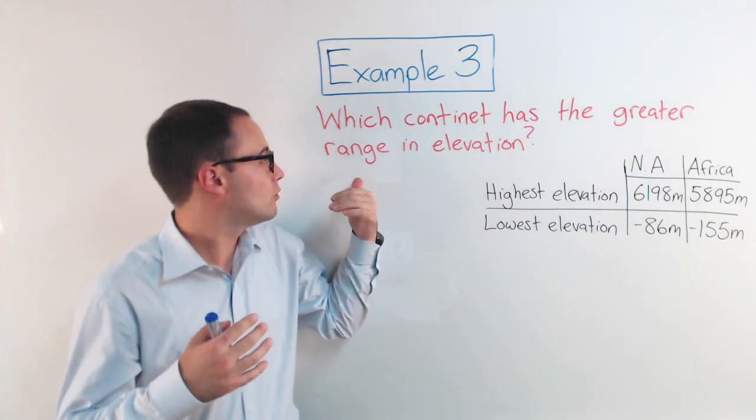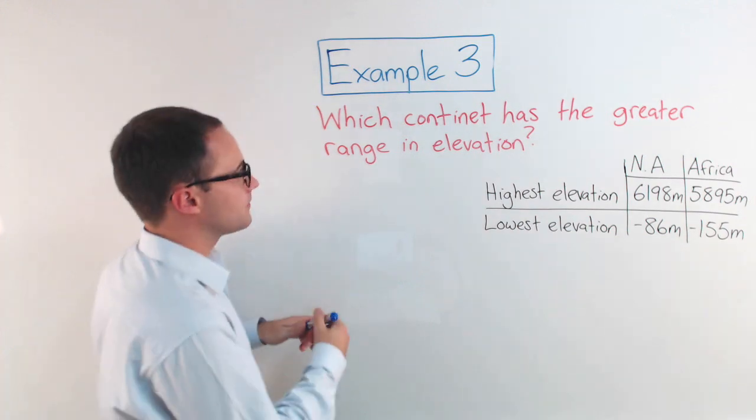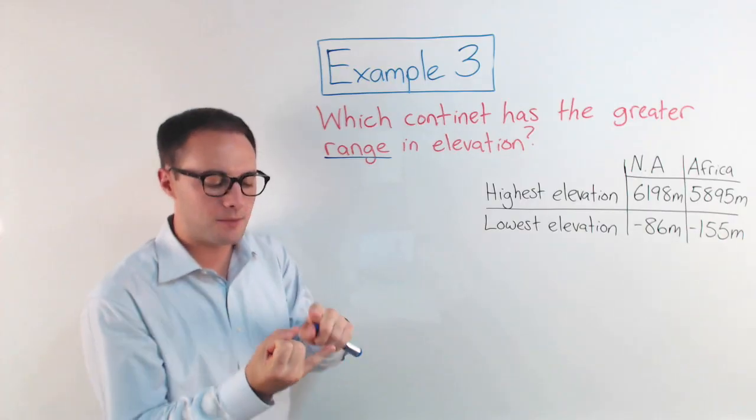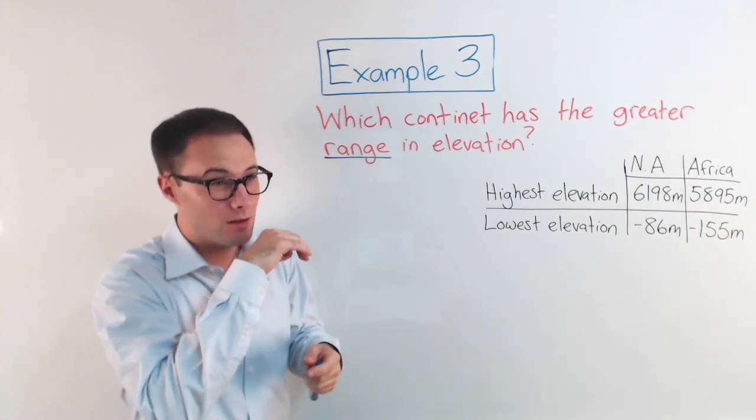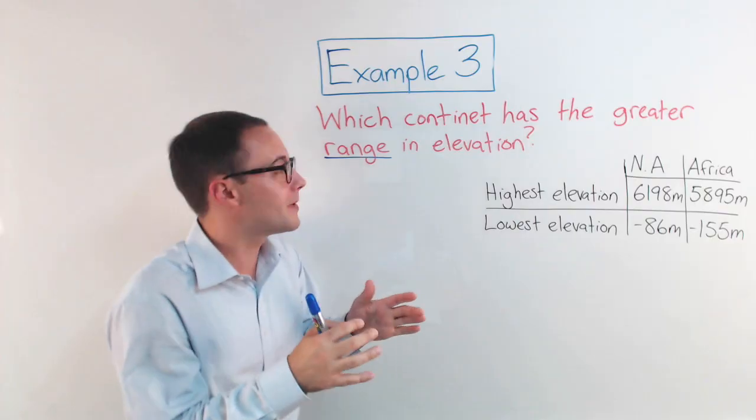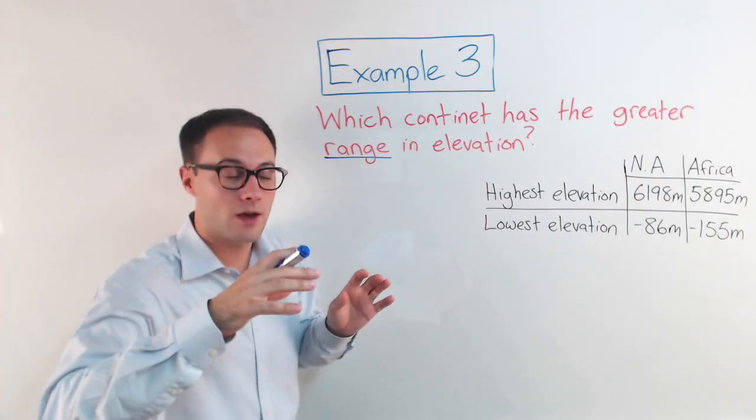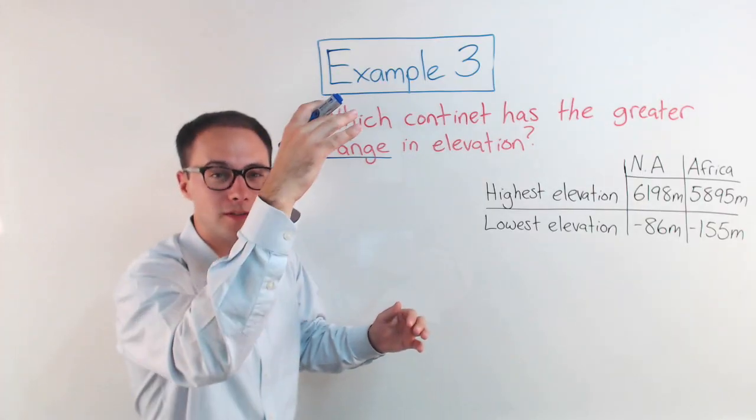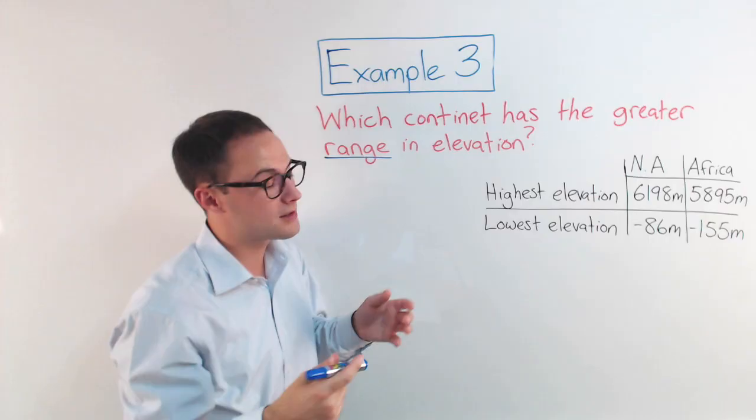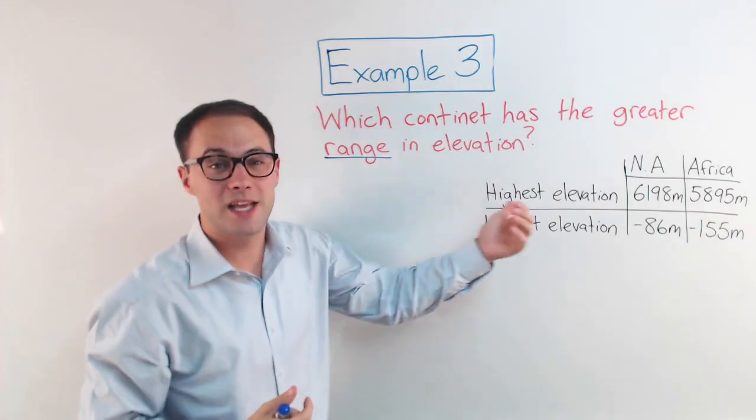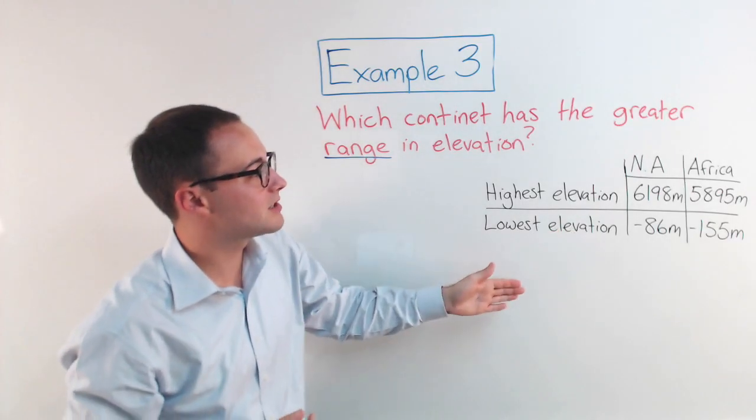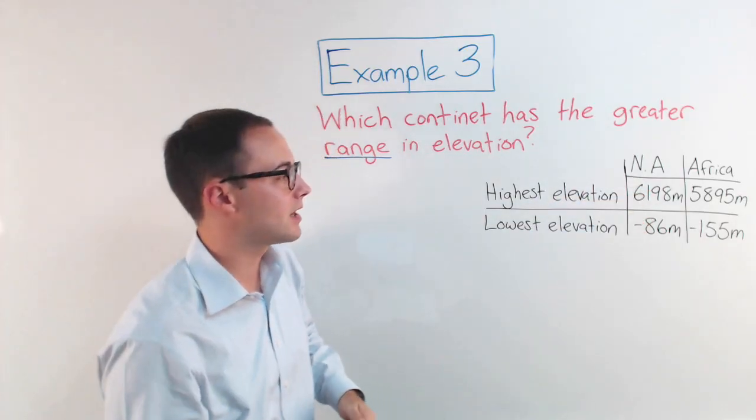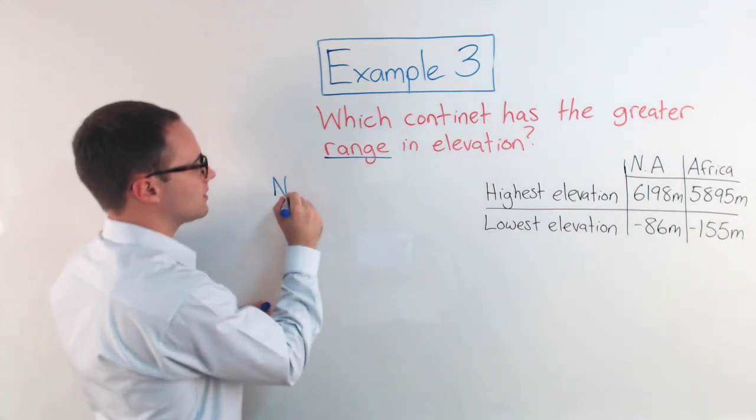Hopefully, you remember the word range. That should look familiar from statistics when you're finding the mean, median, mode, and range. And if you do remember that, you would remember range is the distance from the greatest number to the least. So, all you did was subtract. You found the difference. That's what difference means. We're going to do the same thing. So, the range in elevations, we're going to take the highest and subtract the lowest. And that's going to give us the range in elevation. So, for North America, let's start with that.